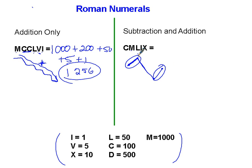The two places where I go up, I want to circle those. I to X goes up, C to M goes up.